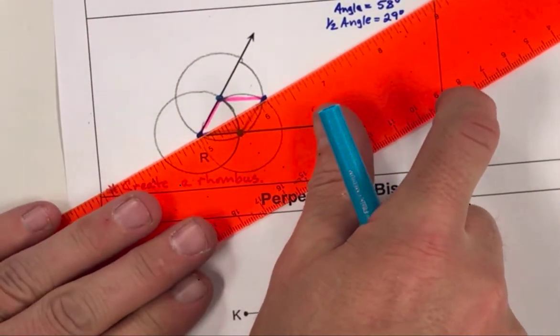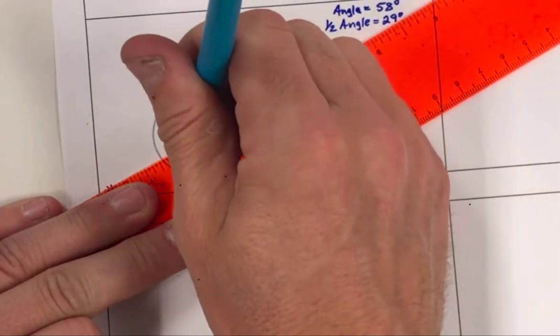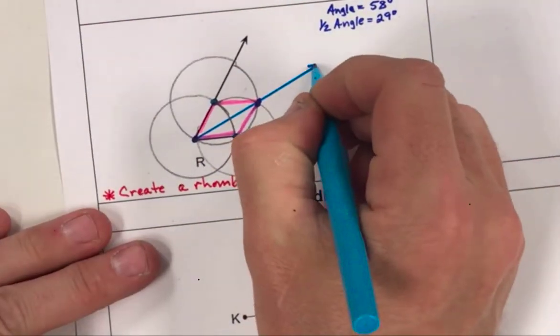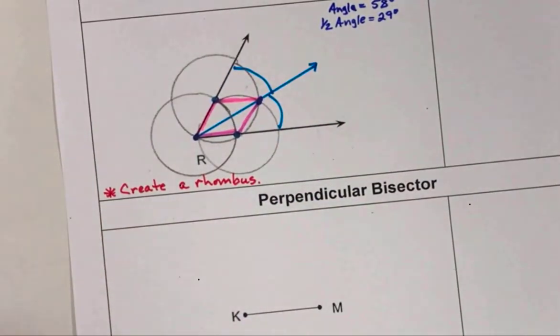A rhombus always has the diagonals bisecting opposite angles. So if I bisect this set of two rays from this rhombus, when I draw this line in, this should, in the end, be really close to, if not perfectly, 29 degrees. This angle will be 29 degrees, and this angle over here will be 29 degrees. We'll verify that right now.